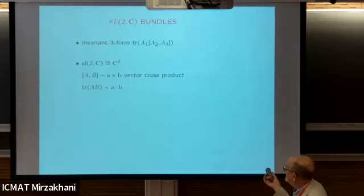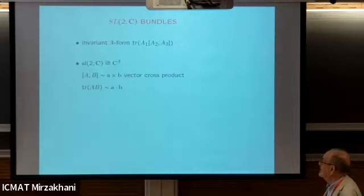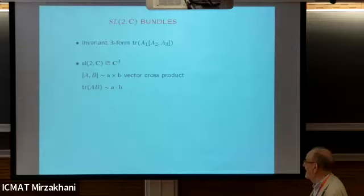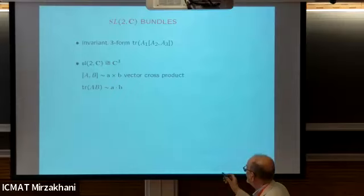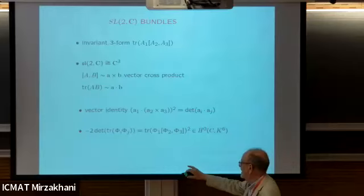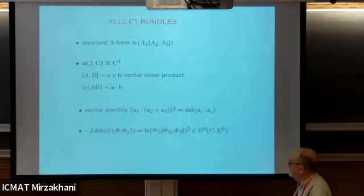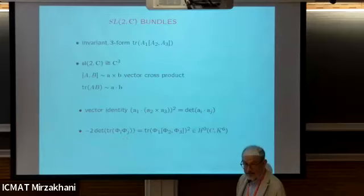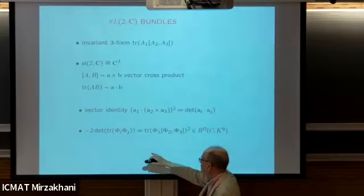This is rather like the vector cross product - trace of AB is like the dot product. We have the vector identity we all learned at university. What it means in this context is that if we evaluate the Cartan form for SL(2) on three Higgs fields, we can understand the value in terms of trace(phi_i phi_j). This is part of the ordinary integrable system - a 3 by 3 matrix of quadratic differentials, and the determinant is a section of the monocanonical power of K, which is the square of this one.